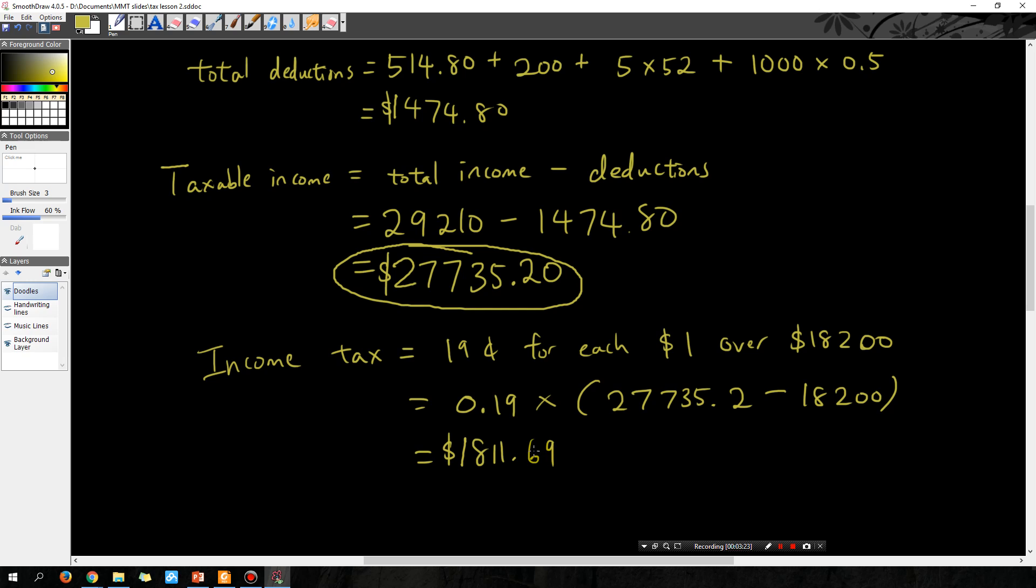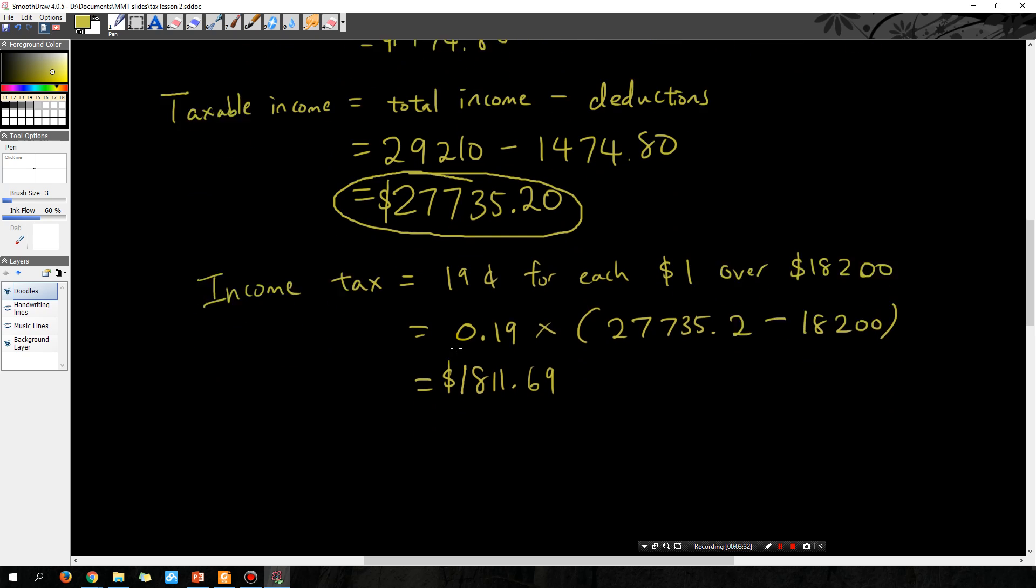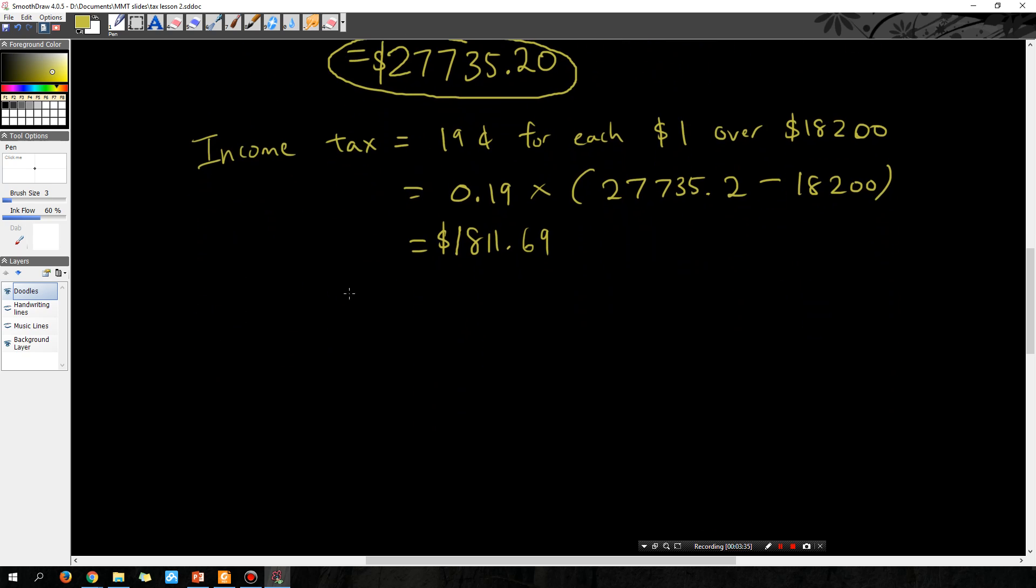So that is how much income tax John has to pay. Let's do a different example. Let's say it's a different person, because we want to now trial a different tax bracket. So Emma has a taxable income of $60,000 a year.